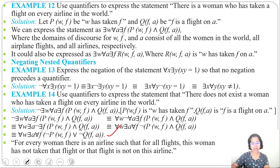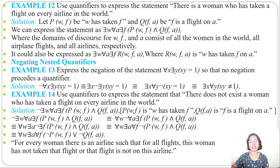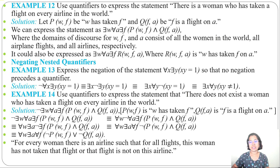With this, I am finishing nested quantifiers. When one quantifier is within the scope of another, it is called a nested quantifier. I also discussed how to translate mathematical statements or English statements using nested quantifiers, how to translate nested quantifiers to English statements, and how to add negation to nested quantifiers. In the next lecture, I will discuss rules of inference.